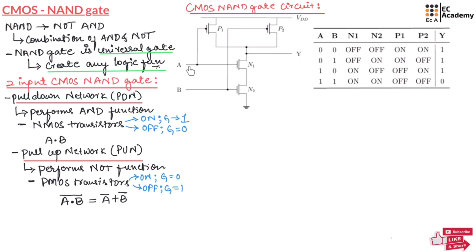Now in the last combination of input, when A is equal to 1 and B is equal to 1, both transistors N1 and N2 will be ON and transistors P1 and P2 will be OFF. So ground will be available across the output Y through transistors N1 and N2, and hence the output will be equal to 0.